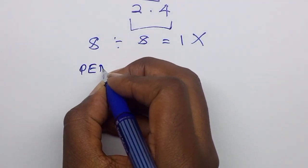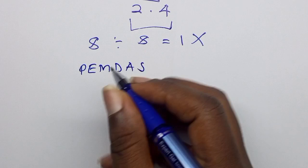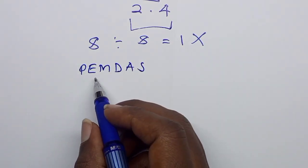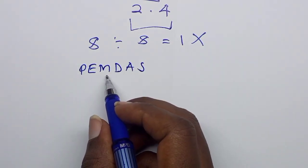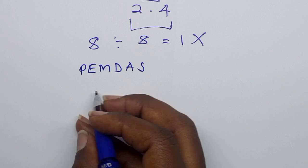So when you follow PEMDAS, P is parenthesis, E is exponents, M is multiplication, D is division, addition and subtraction.